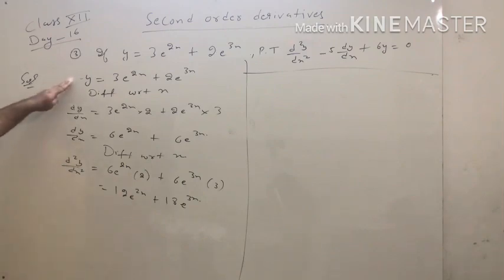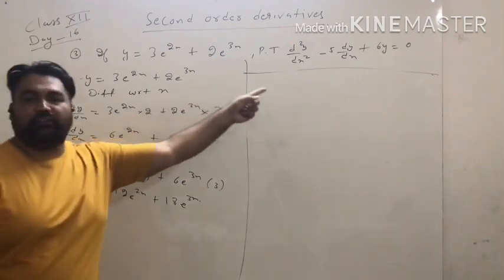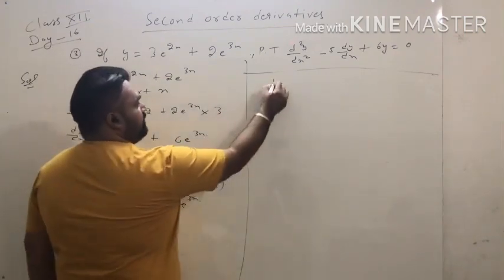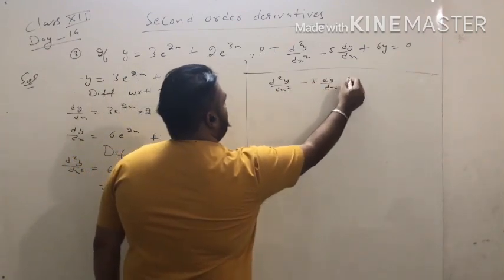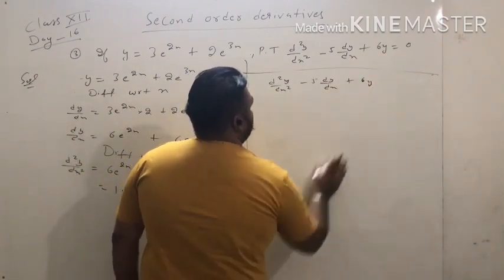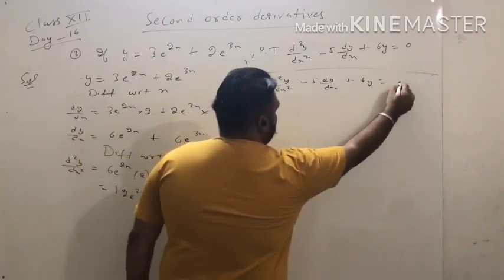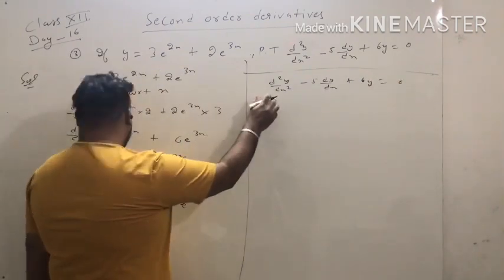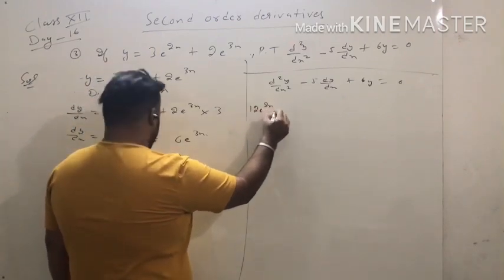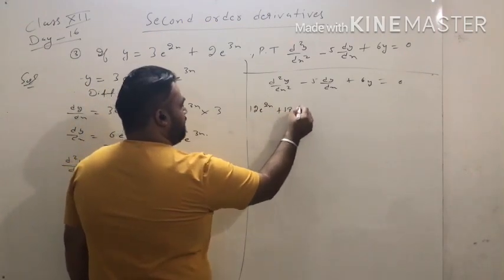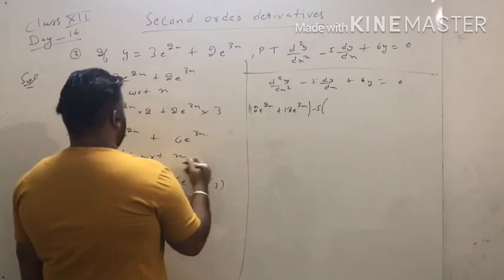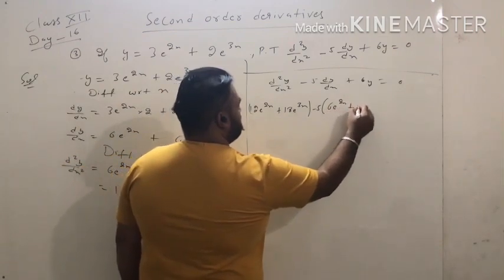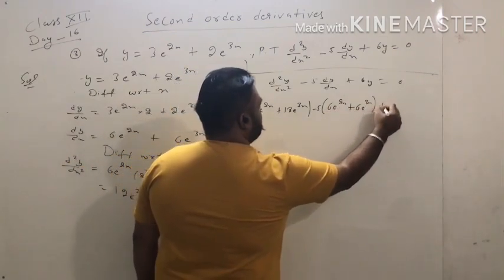Now just put the value of y, the value of the single derivative, and the value of the double derivative into the given equation. The equation is d²y/dx² minus 5·(dy/dx) plus 6y. Substituting: (12e^(2x) + 18e^(3x)) minus 5·(6e^(2x) + 6e^(3x)) plus 6·(3e^(2x) + 2e^(3x)).